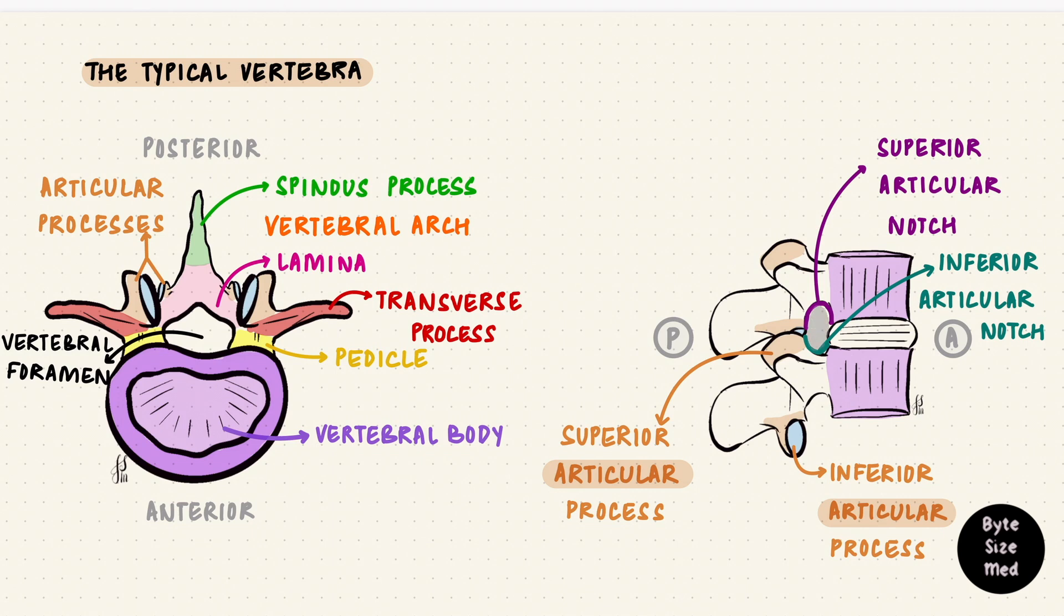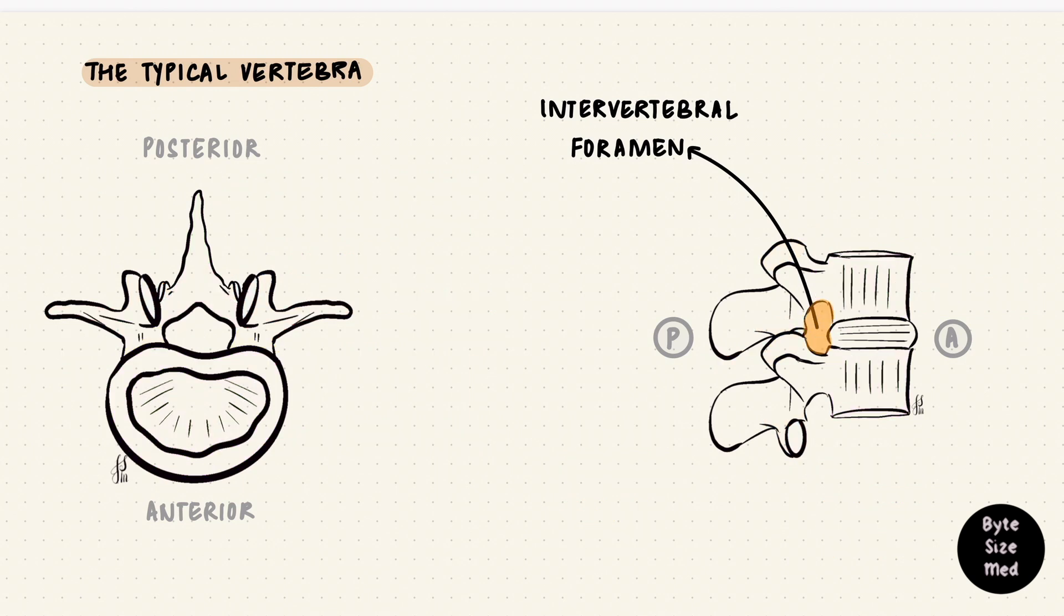They create a space between the vertebrae. It's a space, so a foramen. Between the vertebrae, so intervertebral. This is an intervertebral foramen. This is different from the vertebral foramen. That has the spinal cord. This forms spaces on the sides for the spinal nerves coming from the spinal cord to exit the vertebral column.